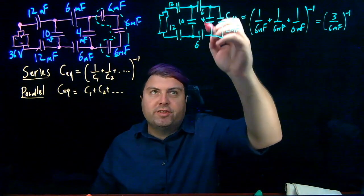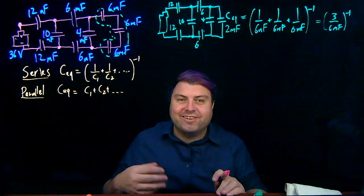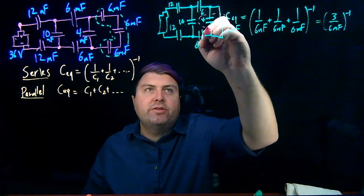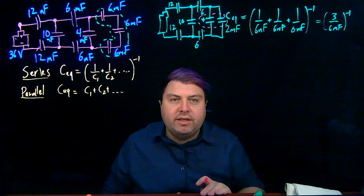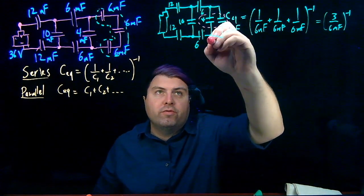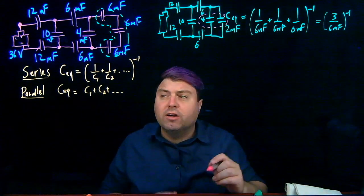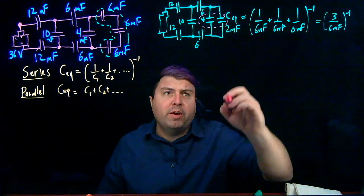Again, the 12 and the 6 still aren't in series or in parallel because they have both options. But now we can look at these two. I can either go through the 4 or the 2. If I go through the 4, I exclude the 2. If I go through the 2, I exclude the 4. So these are in parallel.